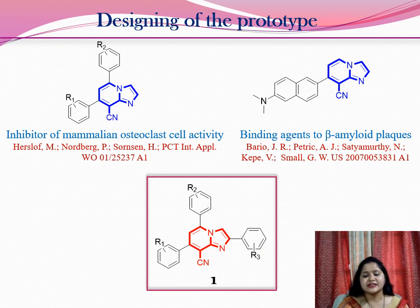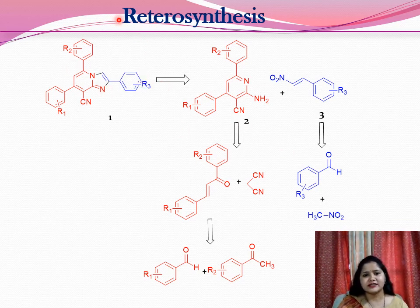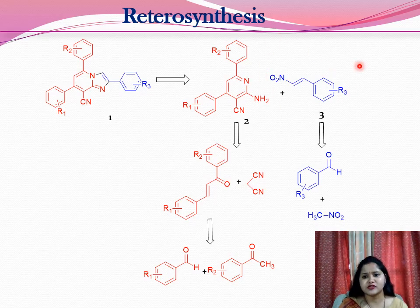This is a highly functionalized amitazopyridine moiety. This slide represents the retrosynthesis of the designed molecule. On retrosynthesis, it was found that this molecule can be obtained from simple reactants: this cyanaminopyridine can in turn be synthesized from a chalcone and malononitrile, and this nitrostyrene can be synthesized from readily available starting materials such as aldehyde and nitromethane.